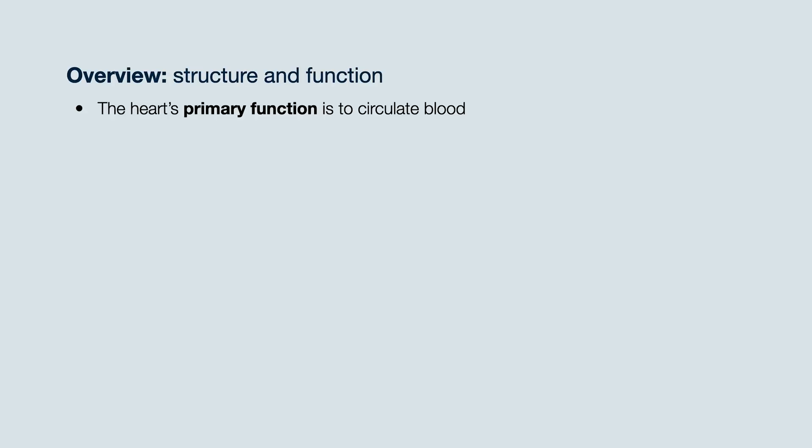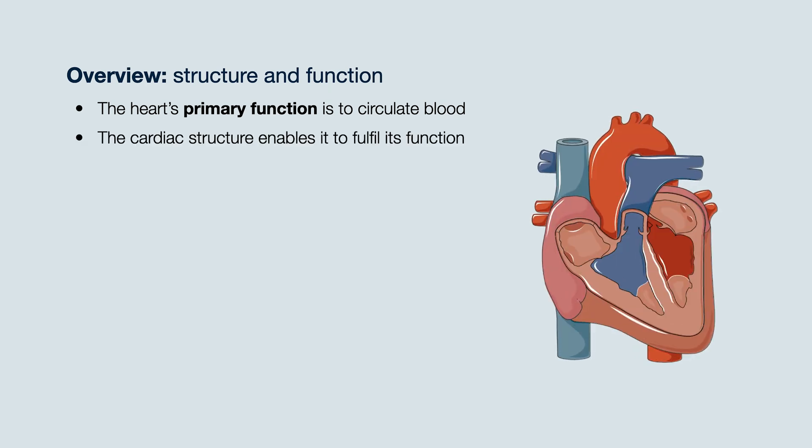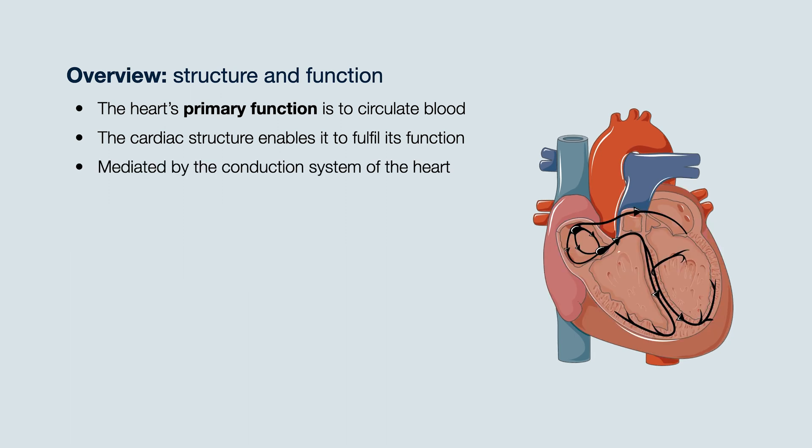In this video, we will review the gross anatomy of the heart. The heart's primary function is to circulate blood around the body, and the cardiac structure enables it to fulfill this function. This whole process of coordinated cardiac contraction is mediated by the conduction system of the heart.